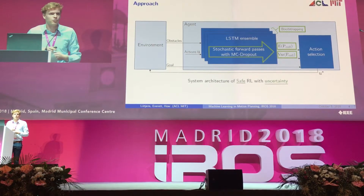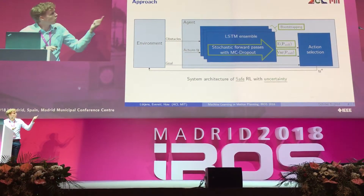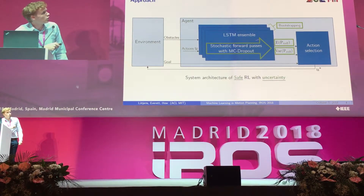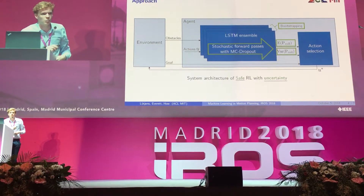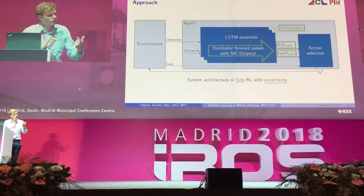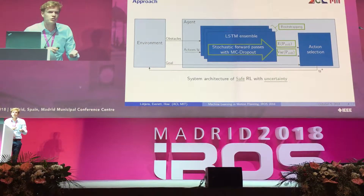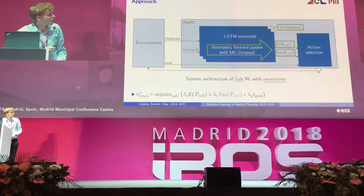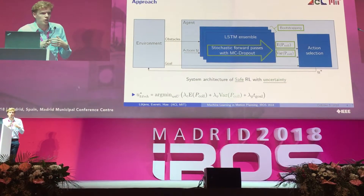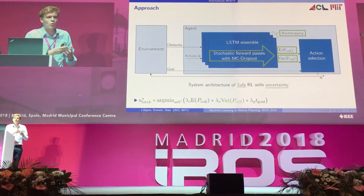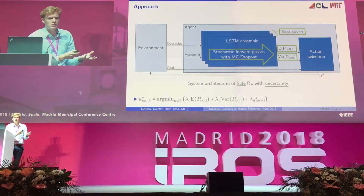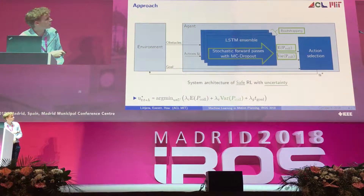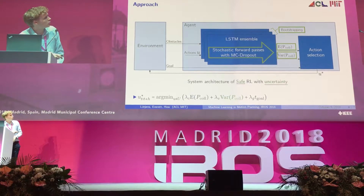In our extended framework, we use dropout and bootstrapping to produce a distribution over the collision probability estimates. The variance of that distribution is low for known scenarios and very high for novel scenarios after training. Our agent can therefore stay away from regions of uncertainty by taking the action that minimizes collision probability, variance, and time to goal.